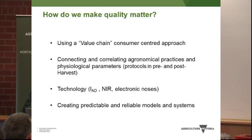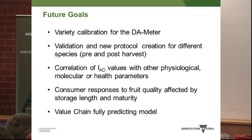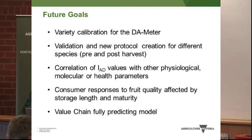What we are currently testing is connecting and correlating agronomical practices — creating protocols in pre and post harvest and creating predictable and reliable models — that would be able to really make quality matter. Our future goals are to better understand variety calibrations, meaning the correlation for different varieties between the machine and ethylene production, and new protocols in pre and post harvest to understand how the DA moves with maturity and to predict what quality we would have at the end.